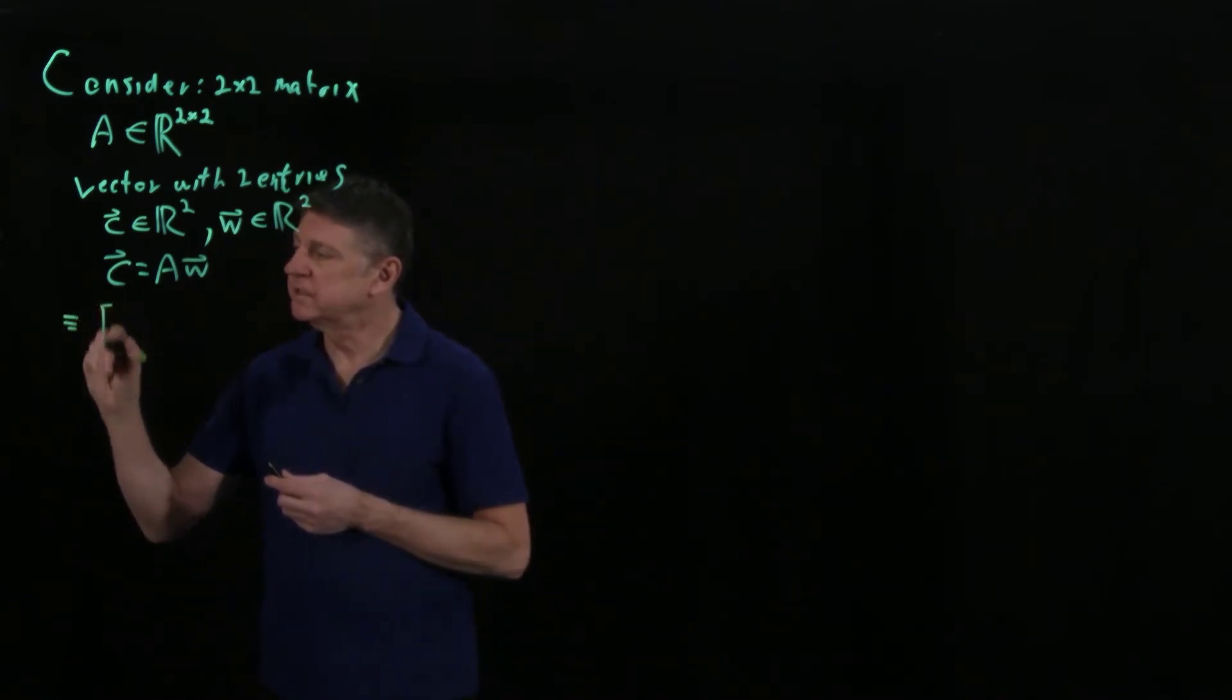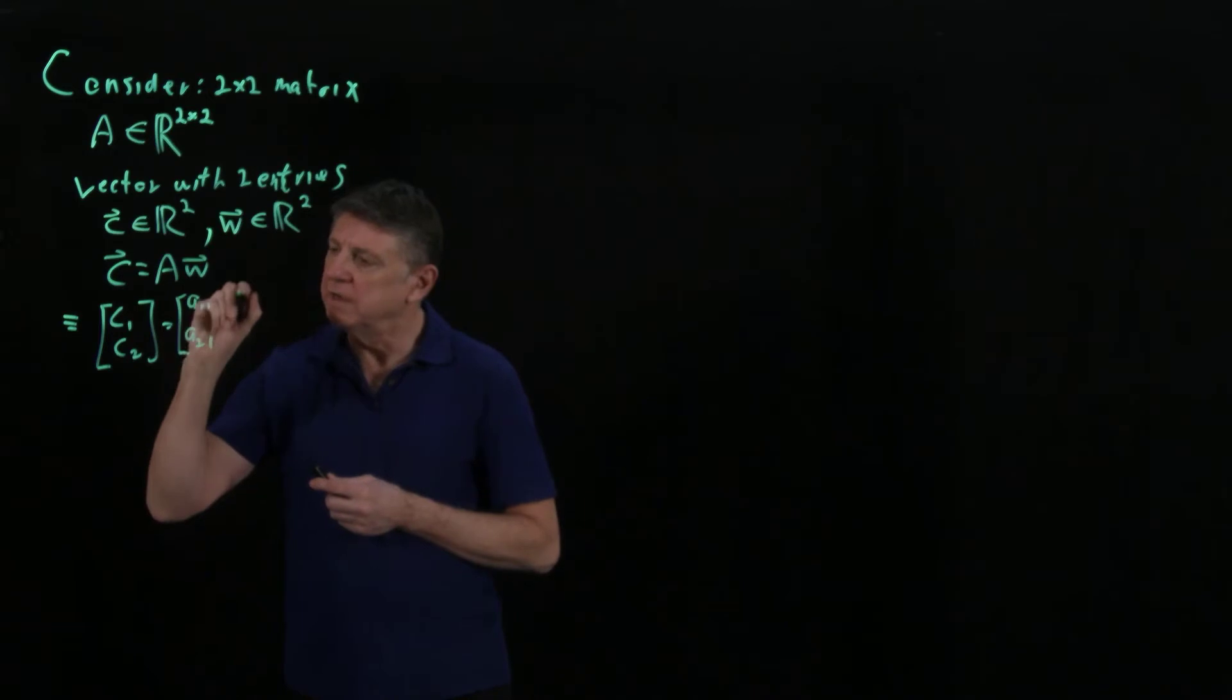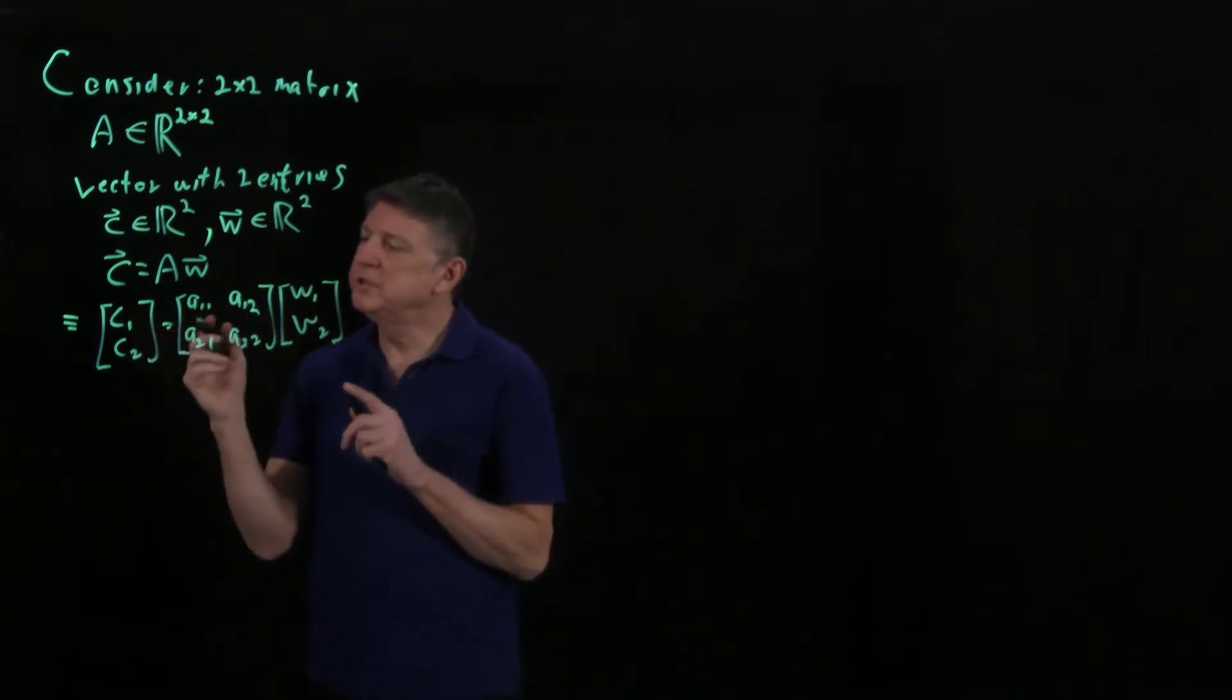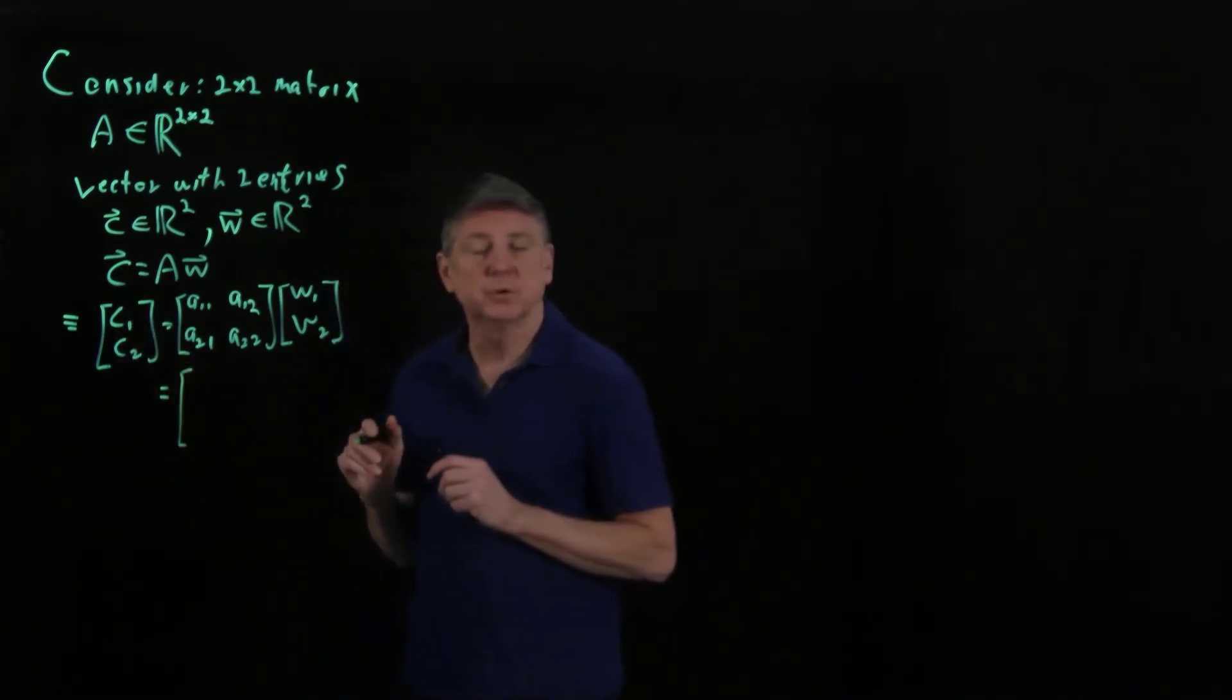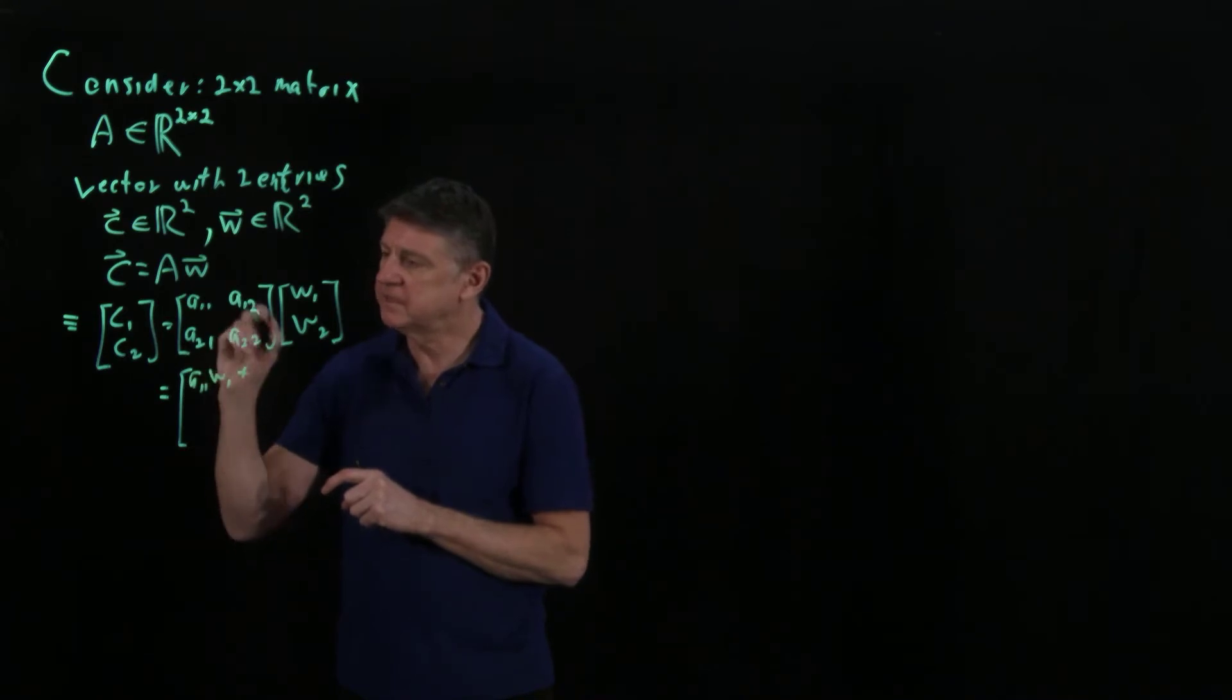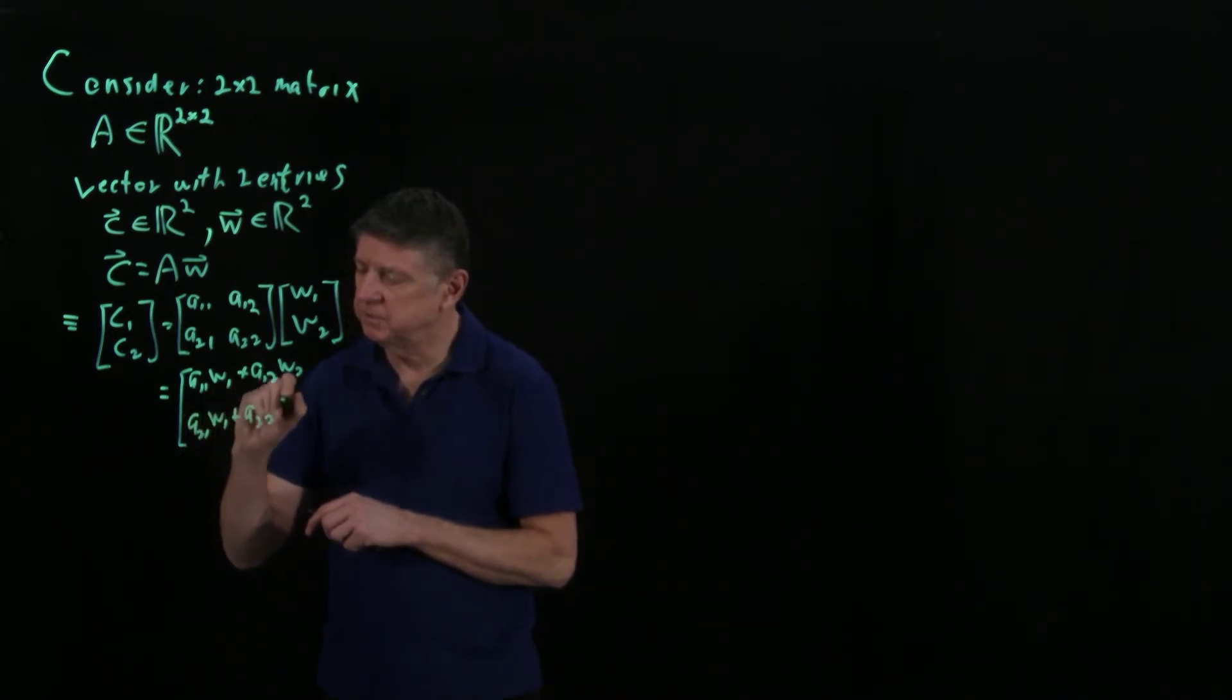We could say that that's equivalent to saying, let's write it by entries C1, C2 equals, and then A would be A11, A21, A12, A22, and then W would be written as W1, W2. And what we can do is we could multiply this through, and the way that most of us were taught to do matrix vector multiplication is to treat the matrix as having a row. And we would say that this is A11 times W1 plus A12 times W2. And then the second entry would be A21 times W1 plus A22 times W2.